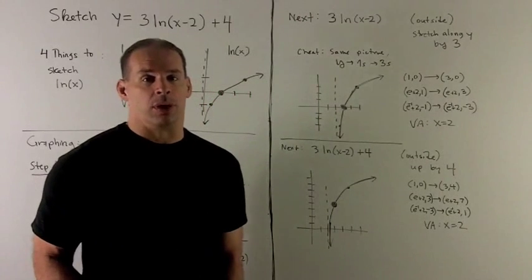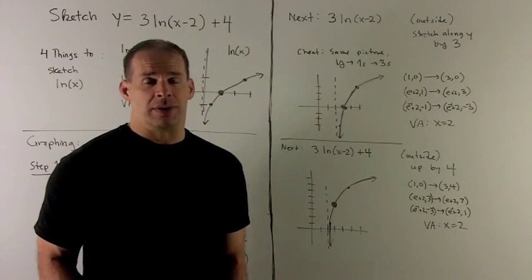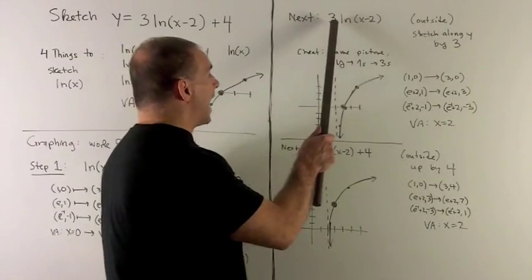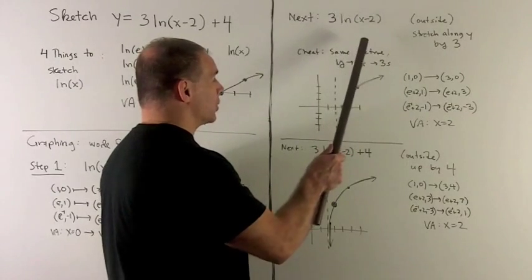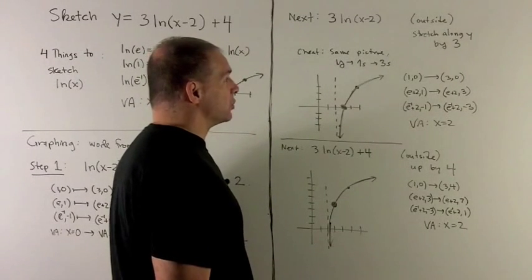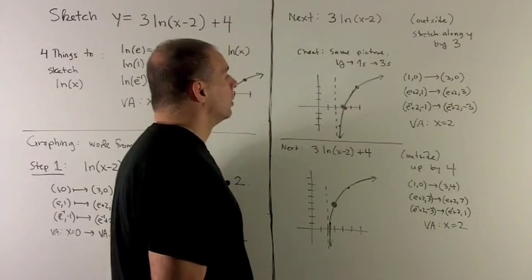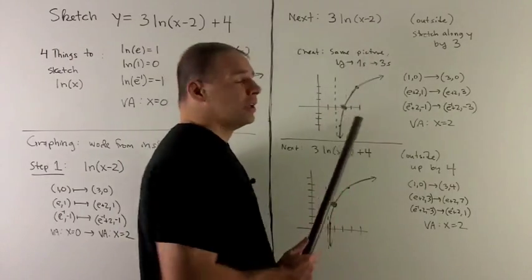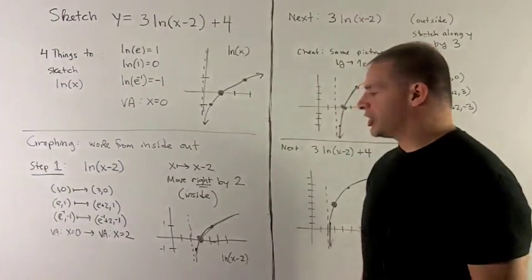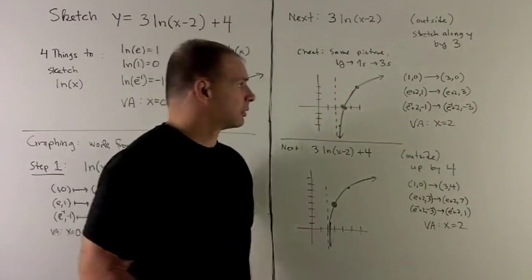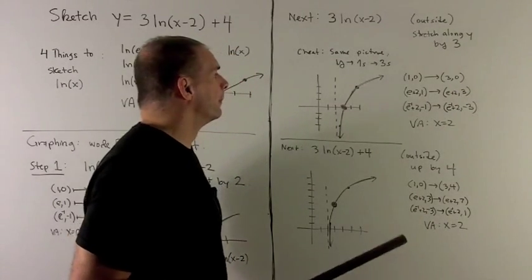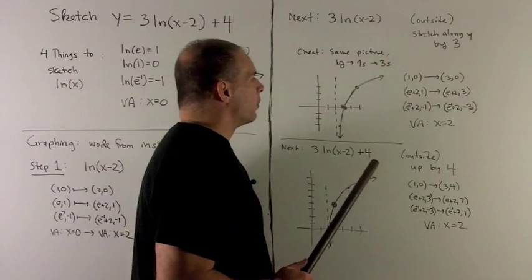What would we do next if we were evaluating? Well, we hit x minus 2 with natural log, then we're going to multiply by 3. This is on the outside, so it's going to stretch y values, not x values. So it's going to work the way we would think. You just multiply all the y values by 3. Now we could cheat. We could use the same picture, and wherever I had the ones along y, right here, we could just change them to 3s, and then we'd be done. But let's not do that so we can keep track of what's going on specifically.